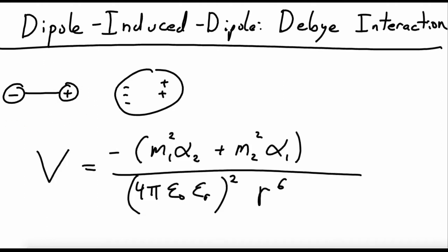All that's summarized in the equation for the Debye interaction. And so we've got a dipole here, M1. We might have another one here, M2. They both have polarizabilities, alpha 1 and alpha 2.